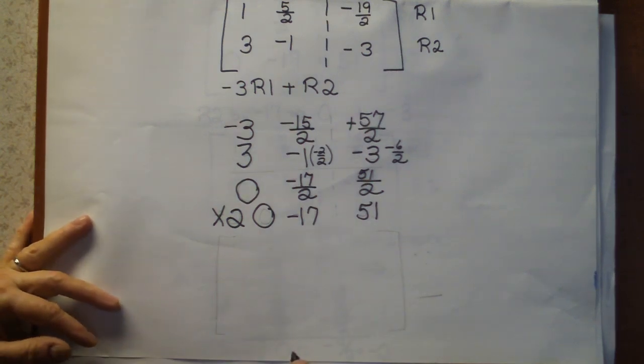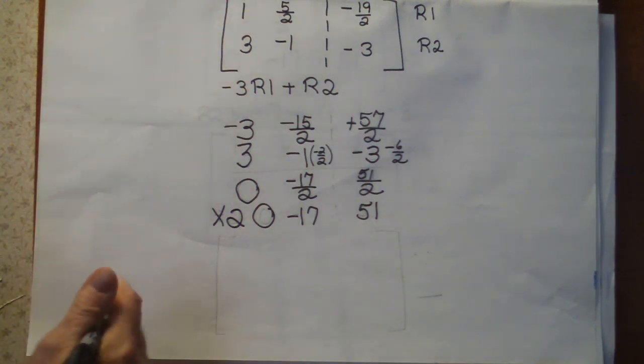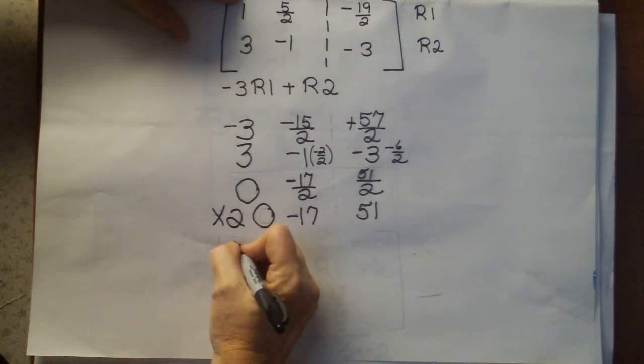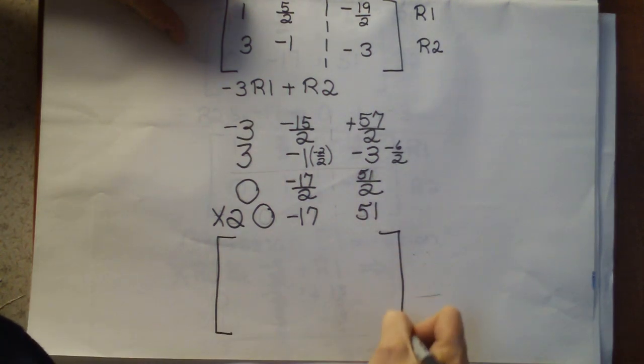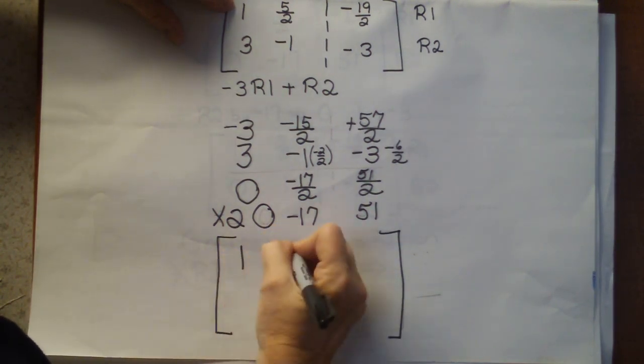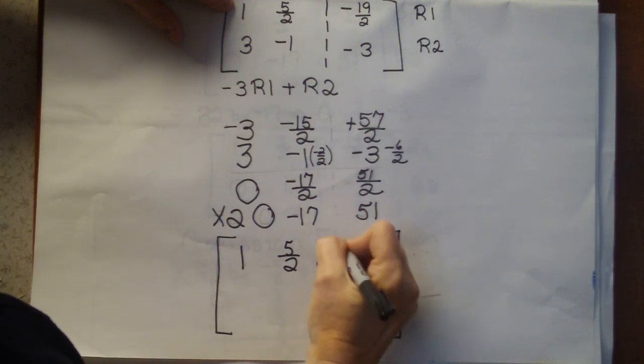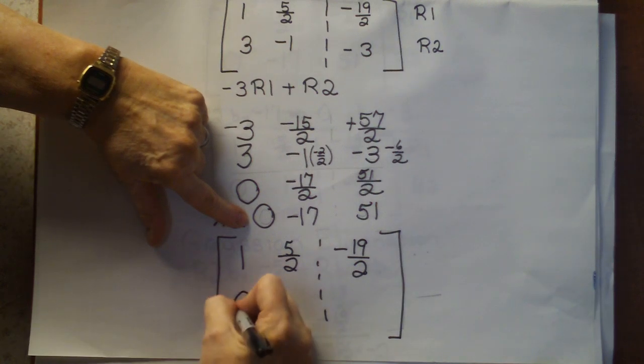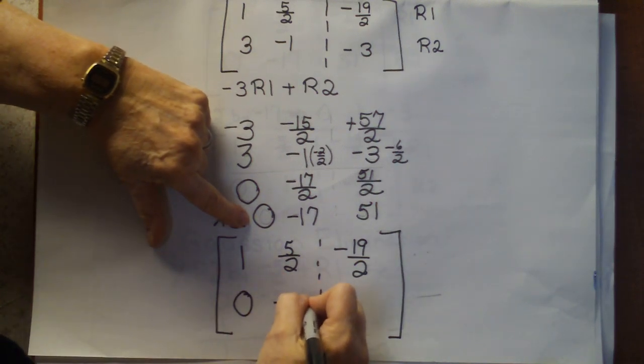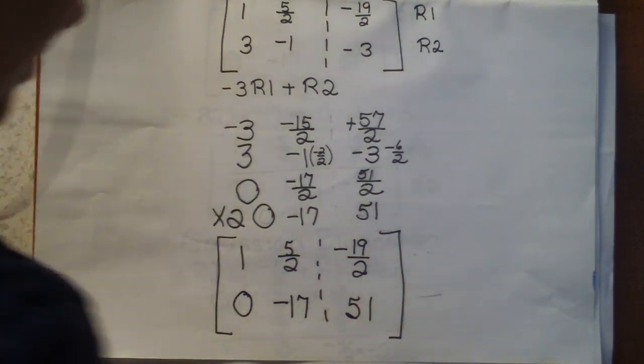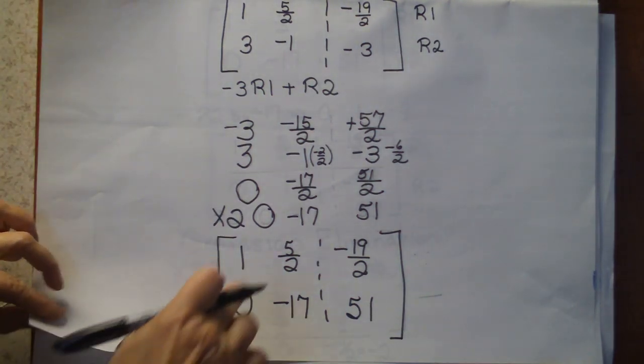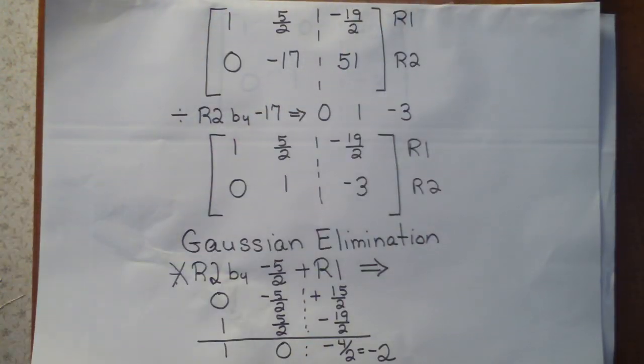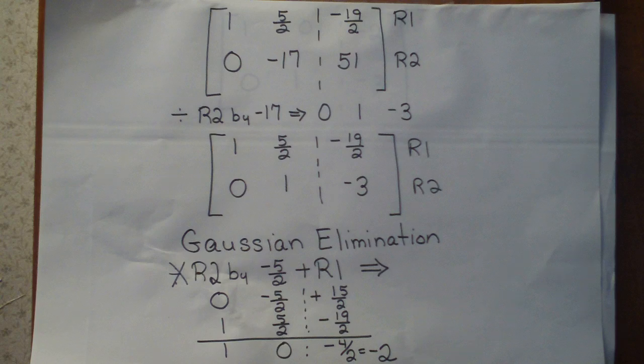Alright, now it's time to rewrite our matrix again. The only thing we're changing is this row 2 down here. Row 1 stays the same. So it's going to be 1, 5 halves, minus 19 halves. And then this is our new row 2, 0, minus 17 and 51. Alright, now this has been copied on the next sheet where we will now keep going until we reach the desired matrix.